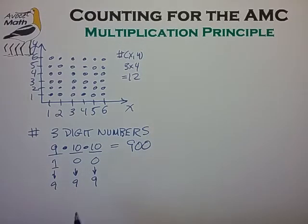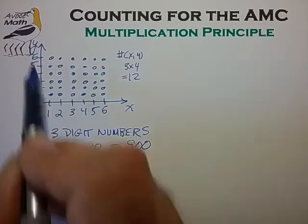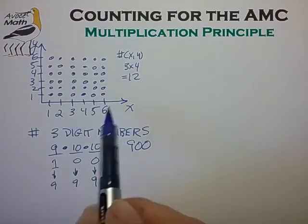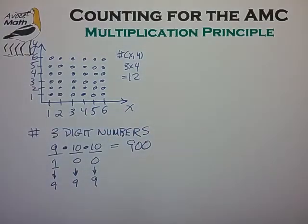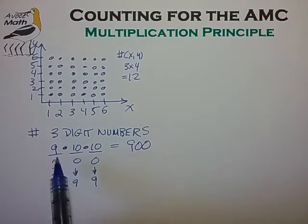This is the case where the choices we're trying to multiply are independent of one another. For the XY axes, our choice for the Y value was independent of our choice for the X value, and for our three-digit number, the choices for each digit were independent of one another.